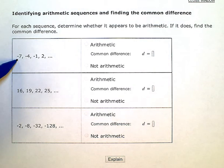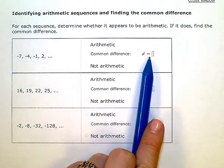To be arithmetic, you have to be adding or subtracting the same thing every time. If we're adding, our common difference or our d value will be positive, or if we're subtracting, it will be negative.